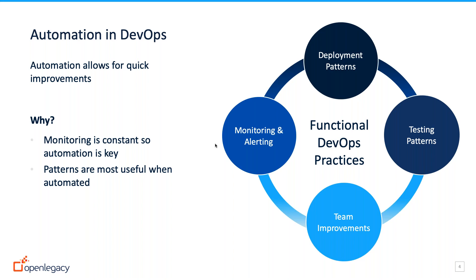When we talk about automation, we talk about automating the processes — mostly scripts around how you promote things through environments, how you version things, how you push and pull from source control. But it also enables a lot of monitoring. Since all of those processes are now automated, you can follow them and monitor them in a way that was not possible when everything was done manually.